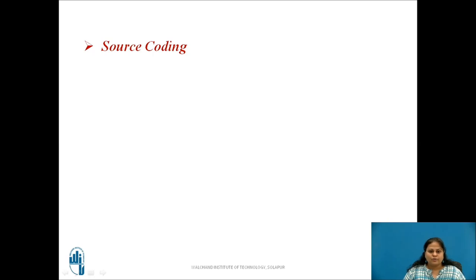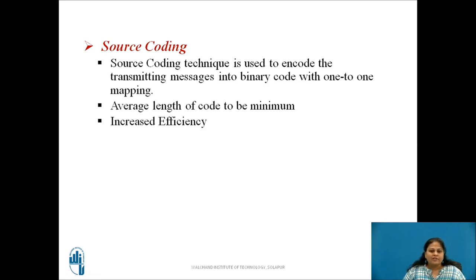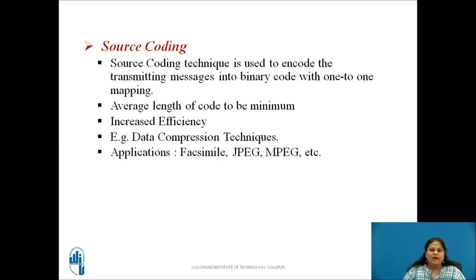Source coding is used to encode the transmitting messages into binary code with one-to-one mapping between the message and its codeword. This coding is done in such a way that the average length of the codeword is smaller or minimum. As the average length is decreased, this in turn increases the efficiency of the system. Different data compression techniques are good examples of source coding techniques. Some of the applications of this coding technique are Facsimile, JPEG, MPEG, etc.